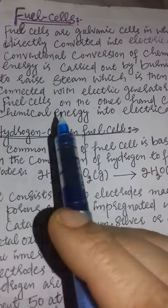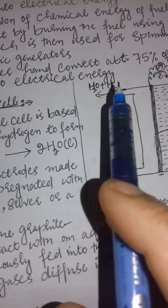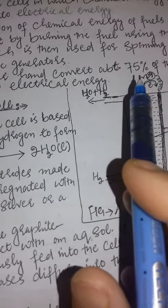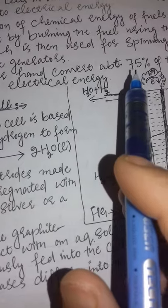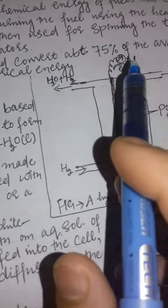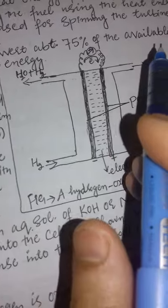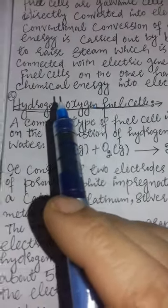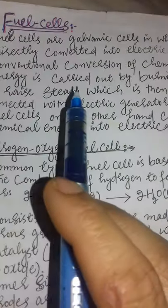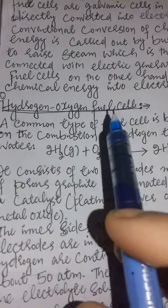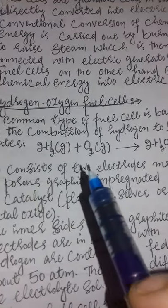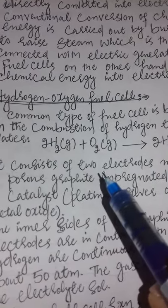Fuel cells convert about 75 to 80 percent of the available chemical energy into electrical energy — this is considered the highest efficiency. This is the general concept of a fuel cell. The fuel cell in your syllabus is the hydrogen-oxygen fuel cell, which depends upon the fuel you use in the cell.